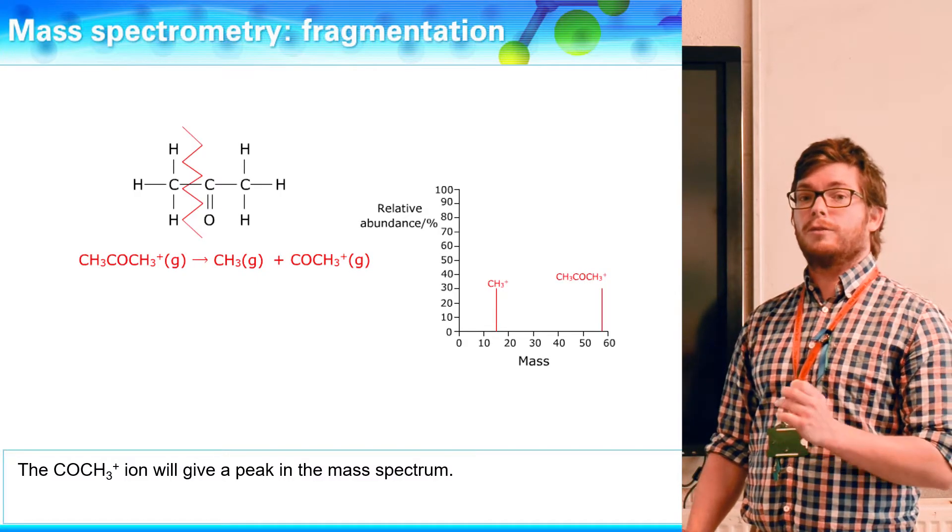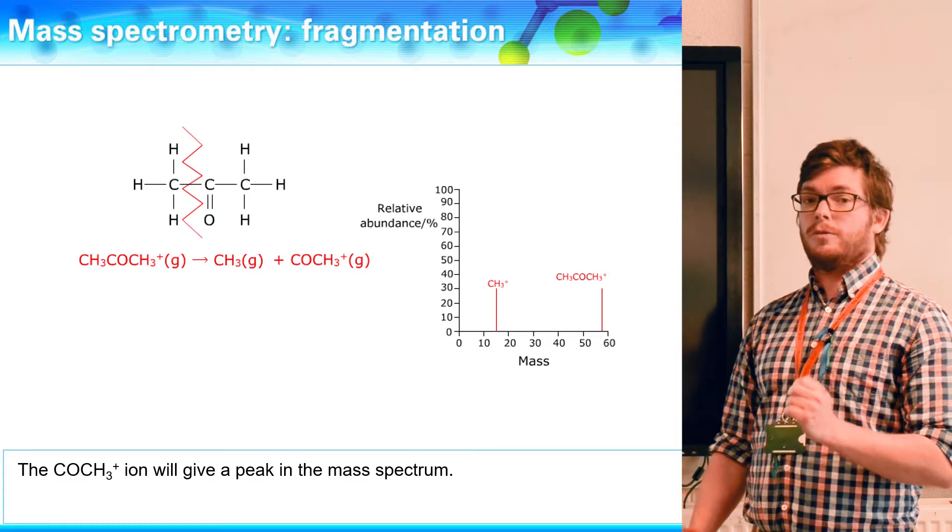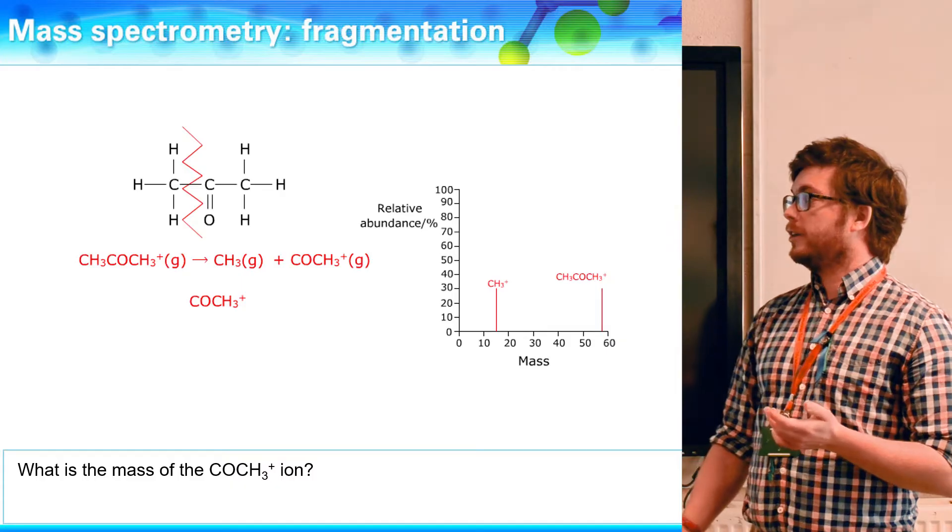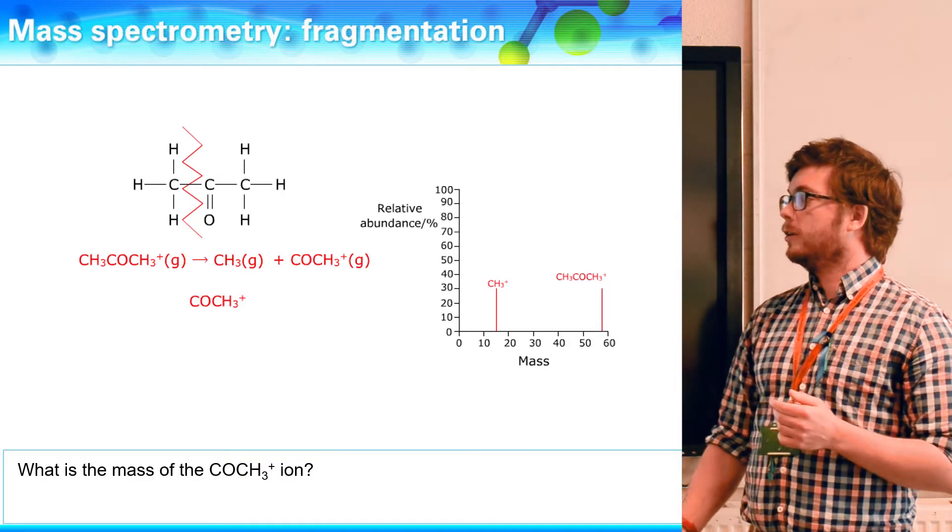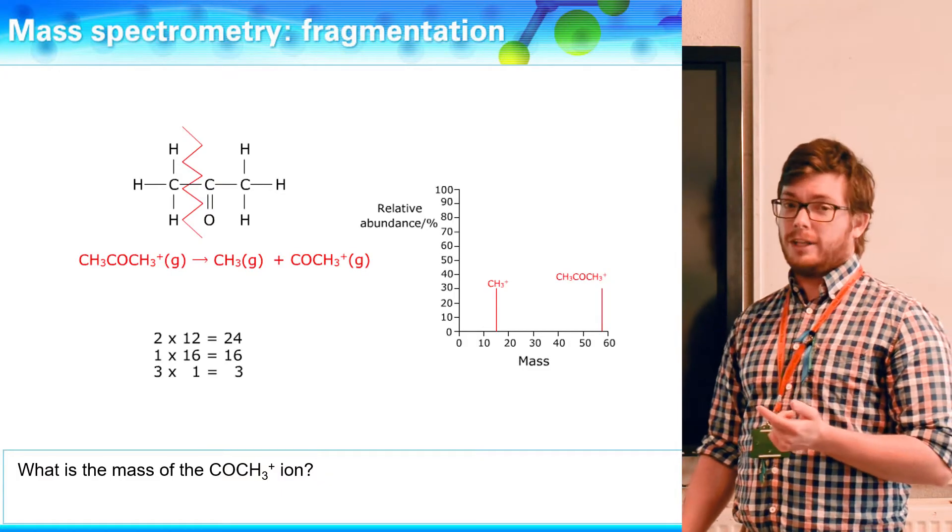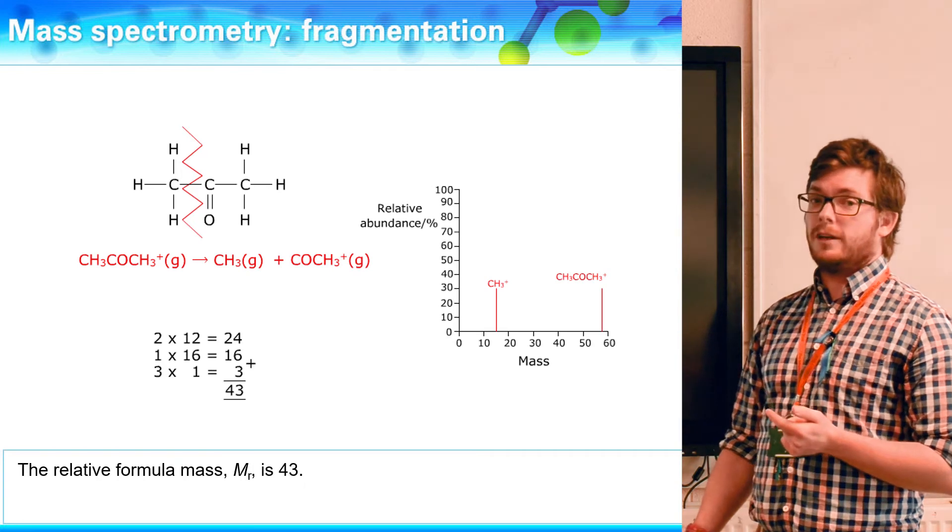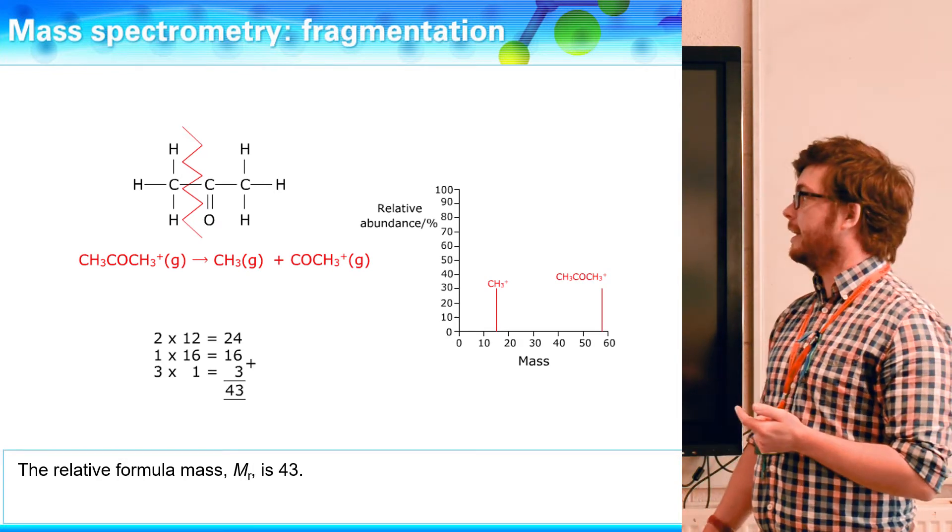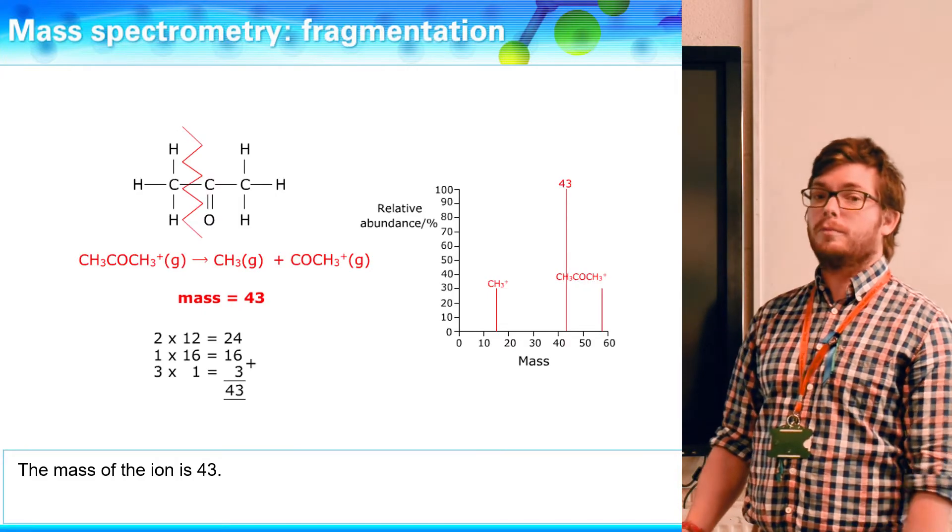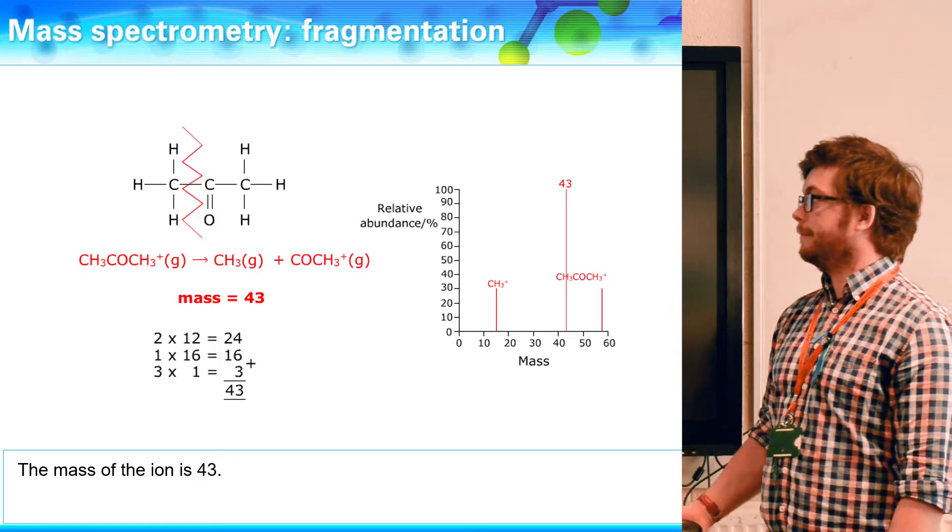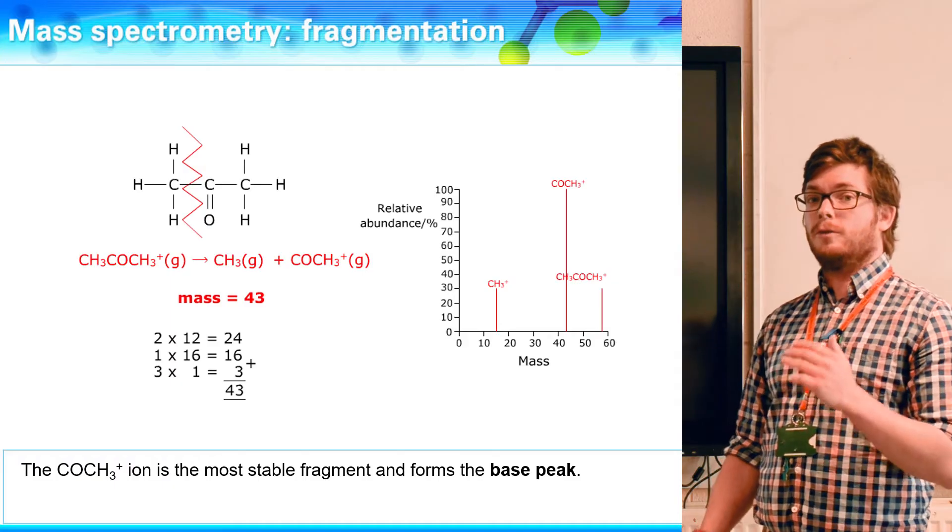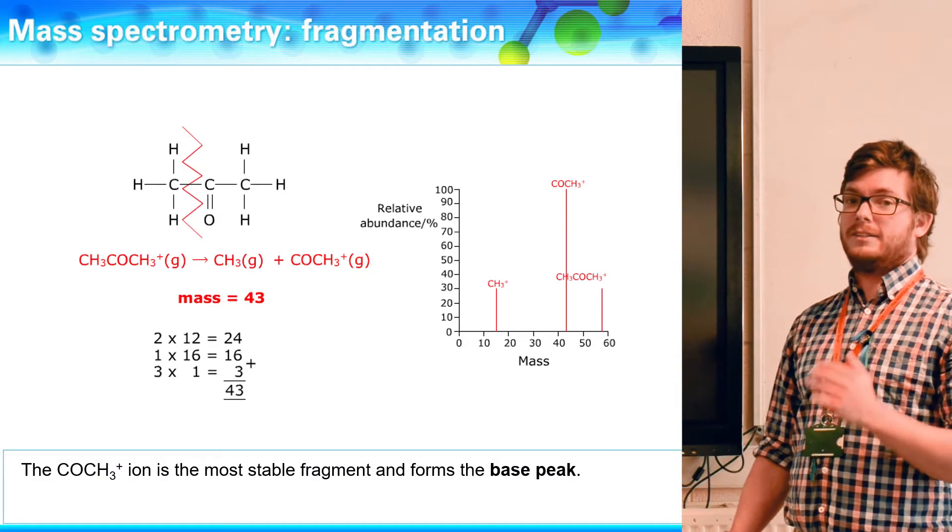It might be that the CH3 forms the free radical and the COCH3 forms the ion. Now again we do the same thing we looked at last time, we can add up the numbers to think about where we would find that peak. So we've got two carbons for 24, one oxygen for 16 and three hydrogens for three which gives us a total of 43. So again we're looking to predict that that would form and you can see here the peak here at 43 and it's formed by the COCH3 ion. Now because this is the most abundant peak it tells us it must therefore be the most stable ion formed and it is referred to as the base peak.